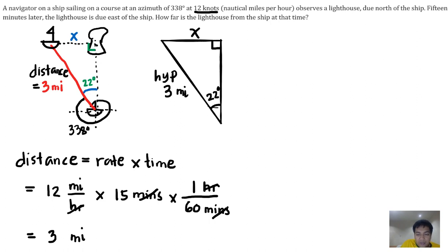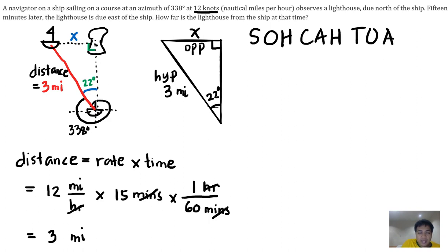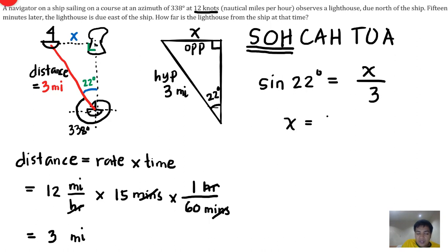Given the angle, what is the relationship with the unknown x? The unknown x is the opposite side. Using our SOH-CAH-TOA, since we have opposite and hypotenuse, we use sine. So sine of 22 degrees equals x divided by 3, therefore x equals 3 multiplied by sine of 22 degrees, which is approximately 1.12 miles.